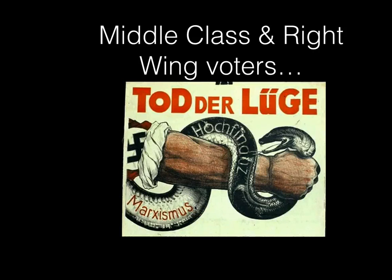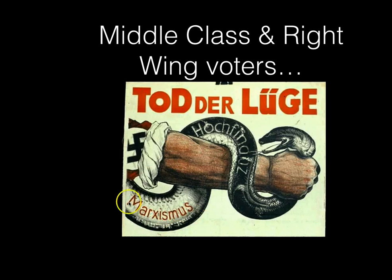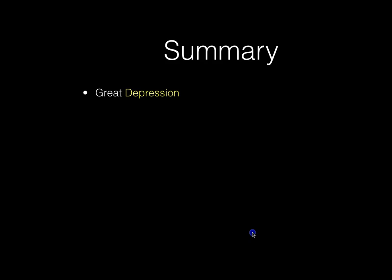A last point to make is that it does seem to be middle-class and right-wing voters that are attracted more towards the Nazi Party. It appears that the Nazi message of fear of communism — because both extremes, Nazis and Communists, were gaining, but the Communists weren't gaining as much — contributed to many middle-class and right-wing voters drifting to the Nazis out of a fear of communism. And they exploited this very ably in their propaganda.